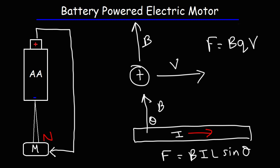Theta is the angle between the magnetic field vector and the current vector. When the angle is 90 degrees, the magnetic force is at its maximum value. The reason for this is sine 90 is equal to 1.